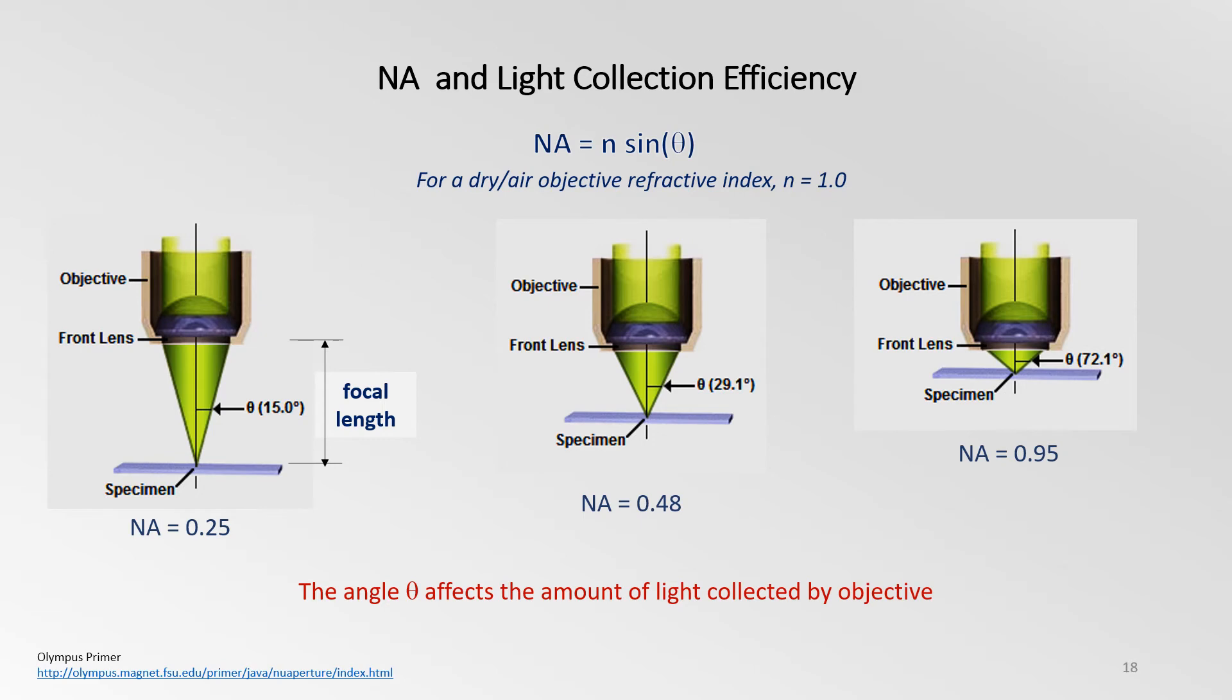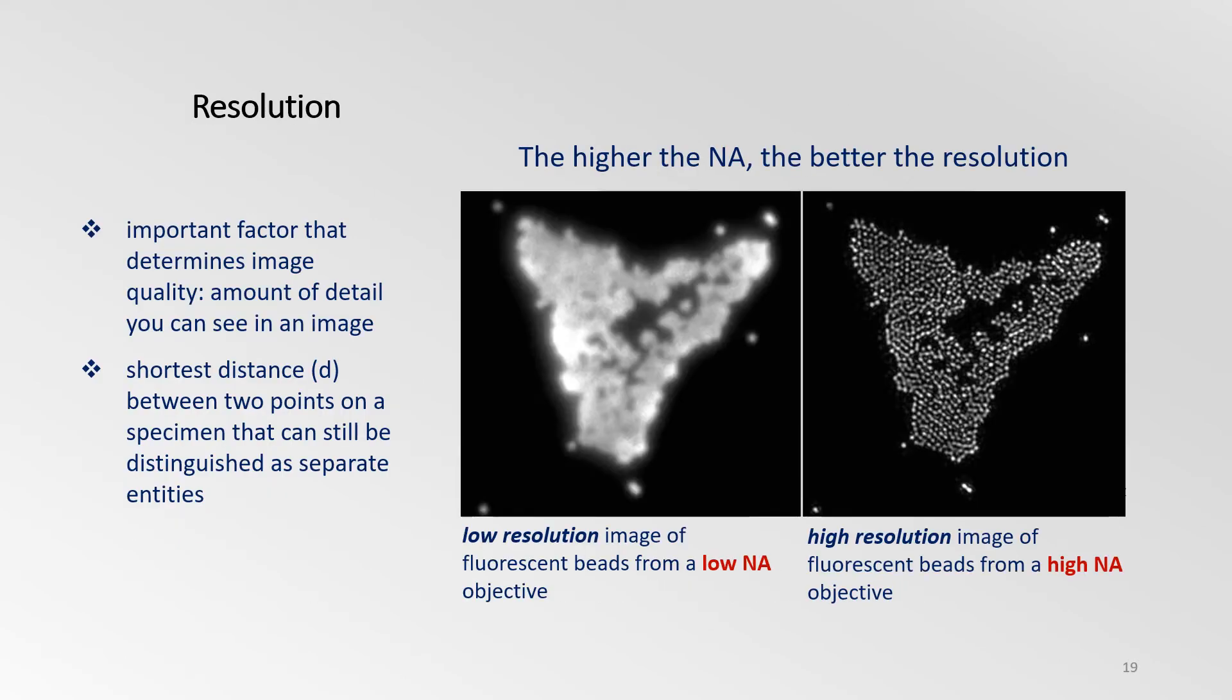Now, these figures illustrate a series of light cones derived from dry or air objectives of varying focal length and numerical apertures. The longer the focal length of the objective, the narrower the angle of light collection. For a dry objective, the refractive index N is 1. Notice, the wider the angle of collection, the greater the capacity to collect light. And based on the equation N sin theta, the higher the NA of the objective.